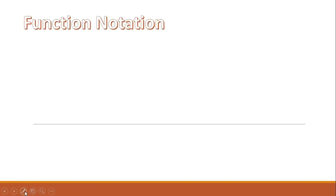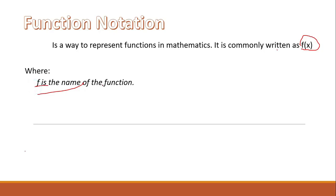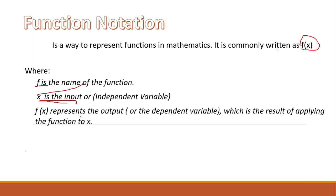The topic I'm going to discuss is function notation. Function notation is a way to represent functions in mathematics. It is commonly written as f of x, where f is the name of the function, x is the input or independent variable, and f of x represents the output or dependent variable, which is the result of applying the function to x.